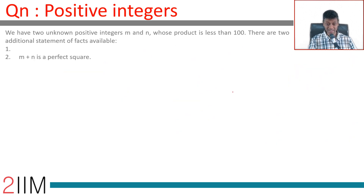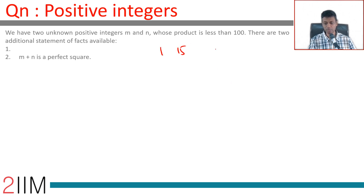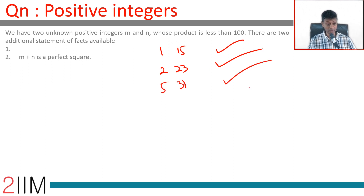Now let's look at statement 2. We know m and n are positive integers with product less than 100, and m+n is a perfect square. But for example: 1+15=16 is a perfect square; 2+23=25 is a perfect square; 5+31=36 is a perfect square. Any of these are possible, so statement 2 alone is not sufficient either.